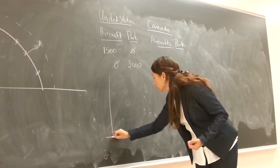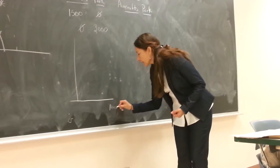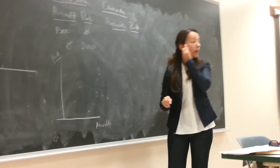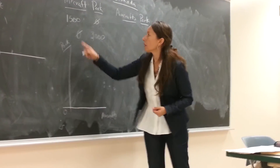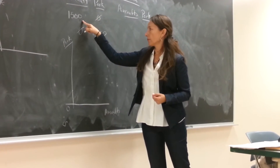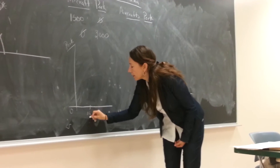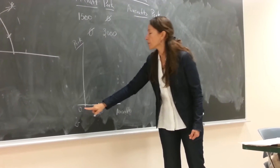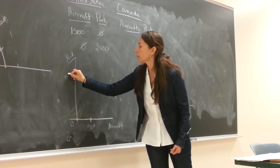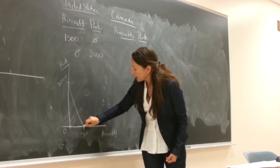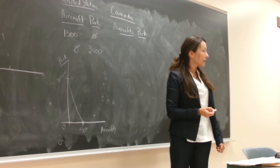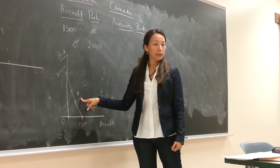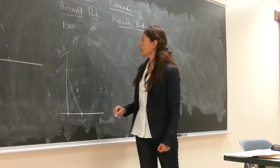We're going to put aircraft on the x-axis and pork on the y-axis. Remember that zero is at the origin. The US can produce 1,500 aircrafts and zero pounds of pork — that's one combination on the x-axis — or zero aircrafts and 3,000 pounds of pork on the y-axis. We connect those points and that becomes the production possibilities curve for the United States. Any combination along that line works, but the point further out is unattainable — I'll call that point U.